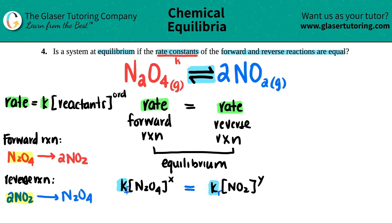So is the system at equilibrium if the rate constants of the forward and reverse reactions are equal? The answer is no. What needs to be the same? The rate of the forward and reverse reactions needs to be the same. And that's it.